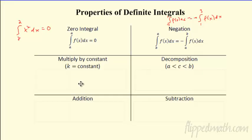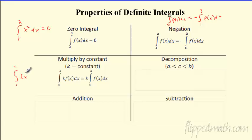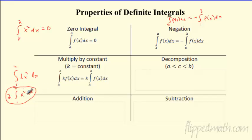That'll make more sense when we do a couple of examples. Next, if you multiply by a constant K — for example, integrating 2x² from 1 to 2 — you're allowed to pull the 2 out in front. Right now you might think this isn't very important, but when we start doing this algebraically, pulling the constant out front will save you a lot of headache.